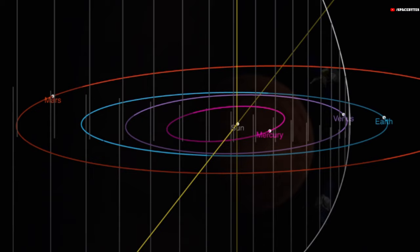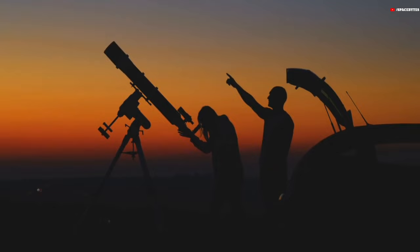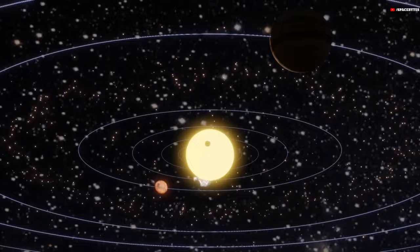12P will reach its nearest point to Earth on April 21, 2024, possibly becoming visible to the naked eye before being propelled back towards the outer solar system. It will not return until 2095.